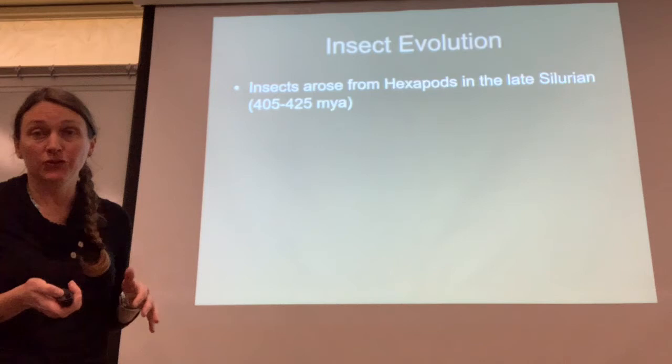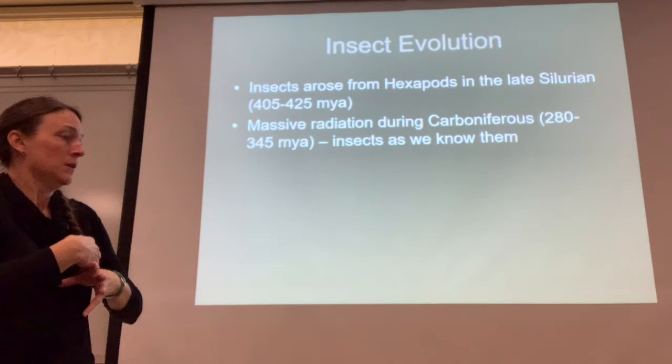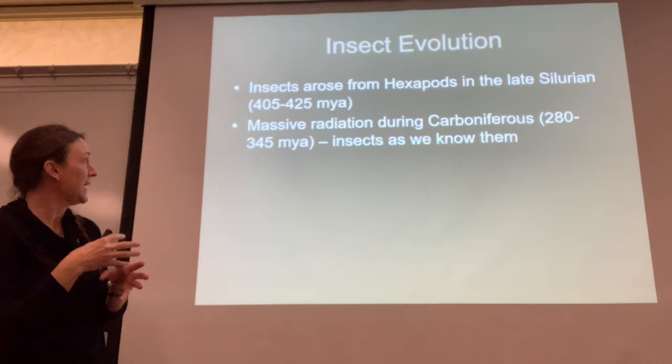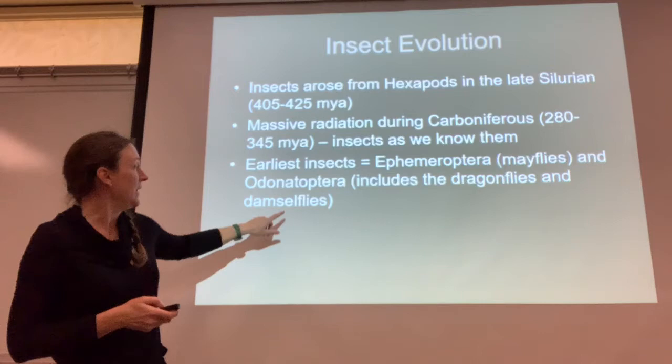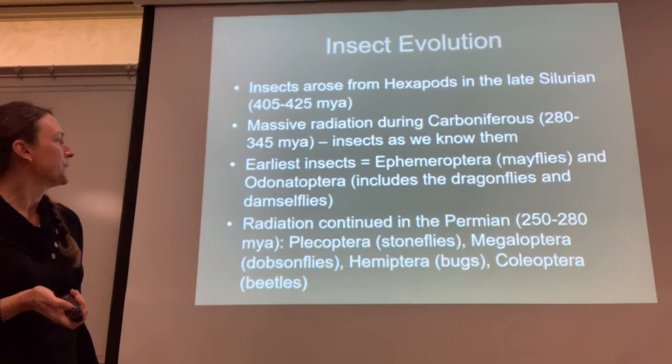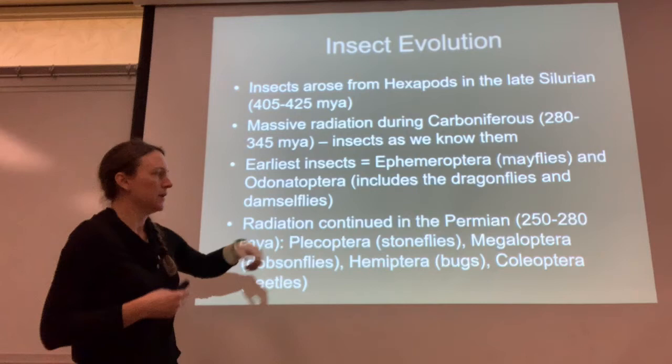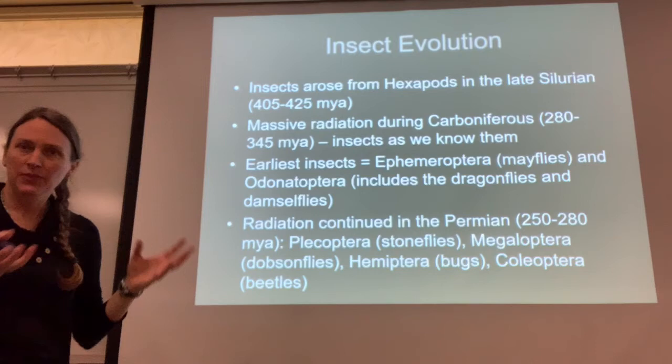Insects arose from hexapods in the late Silurian around 405 to 425 million years ago. There was a massive radiation — a diversification of insects — during the Carboniferous between 280 and 345 million years ago that gave rise to insects as we know them today. Some of the earliest insects were mayflies and dragonflies and damselflies, which is cool because some of the earliest insects were aquatic organisms. This radiation continued in the Permian where we started seeing Plecopterans, stoneflies, Megalopterans, Hemipterans, and Coleopterans.